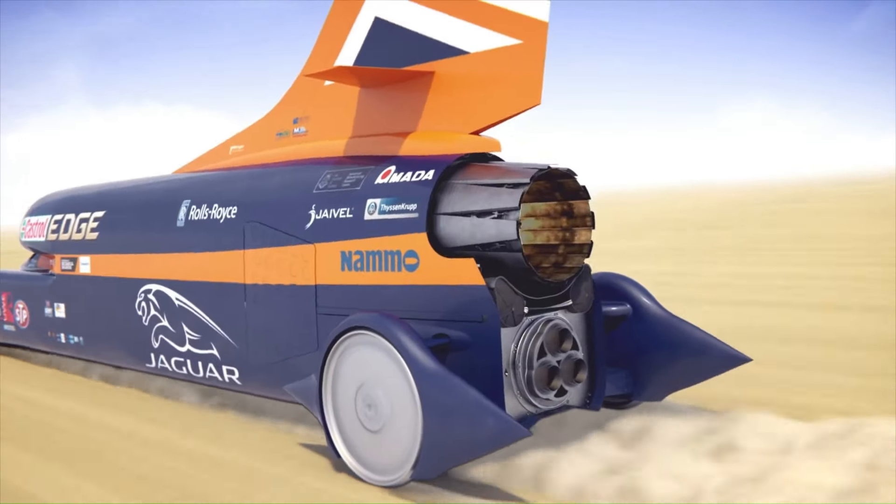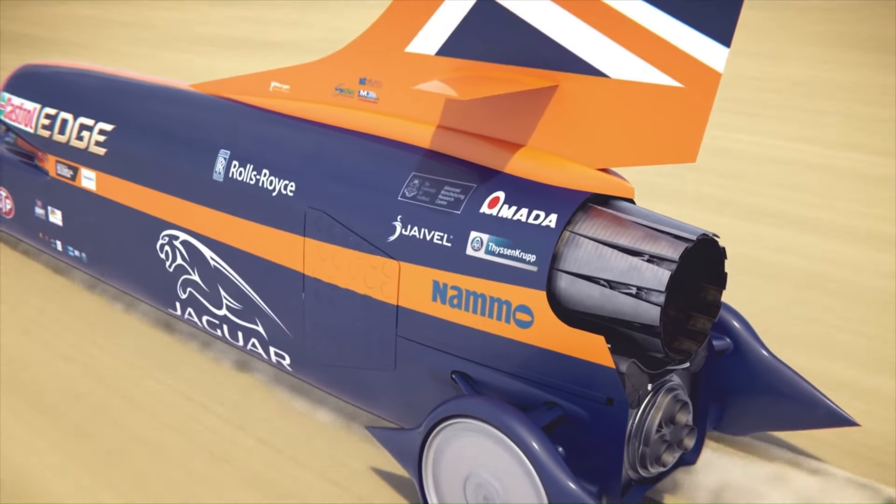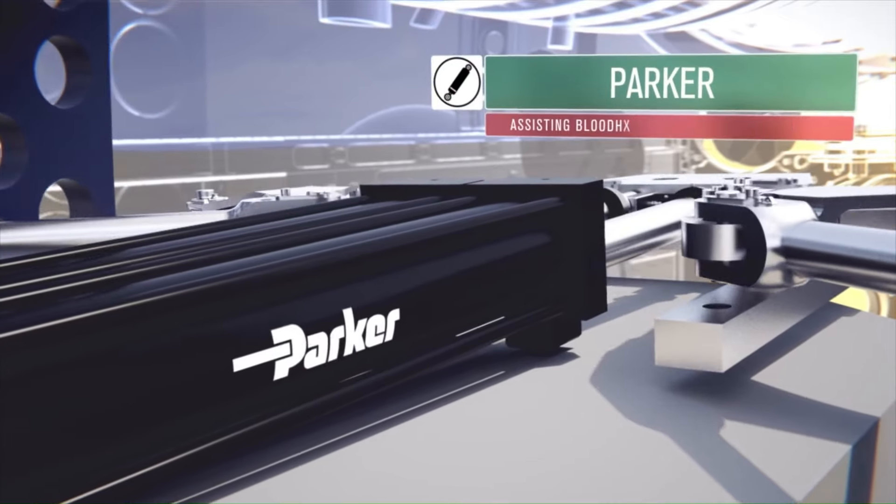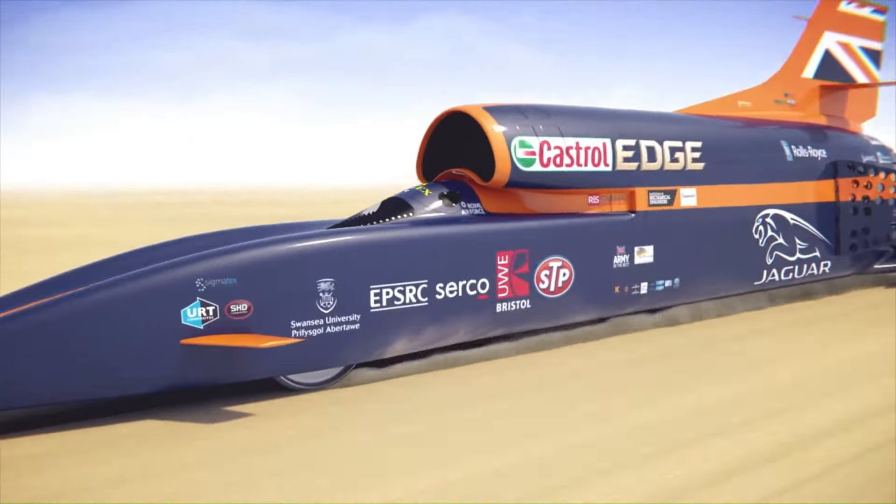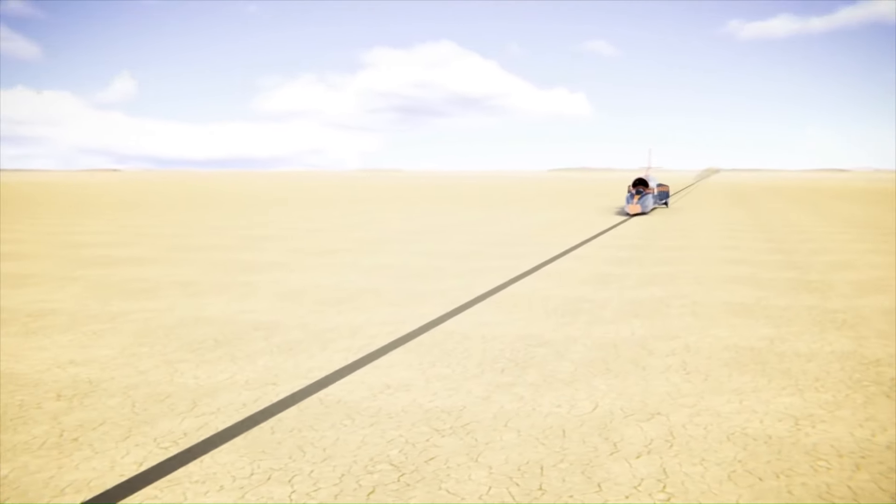The deceleration process is as crucial as acceleration, using air brakes, a parachute, and disc brakes in stages. Bloodhound LSR not only pushes the boundaries of speed, but also aims to inspire future generations of engineers and scientists.